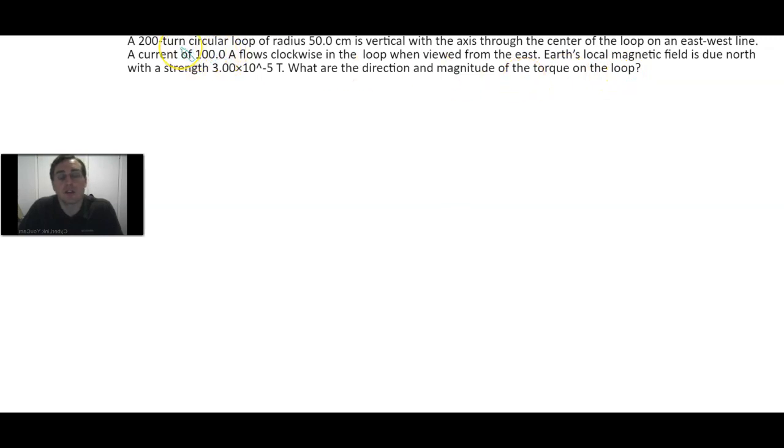Okay, now we can certainly start by writing down our knowns, but I also think sketching a picture is going to be really important. But let's just first start with our knowns, and then we'll go to our picture soon after that. So it's a 200 turn circular loop. So that means n is equal to 200 turns, and that's unitless.